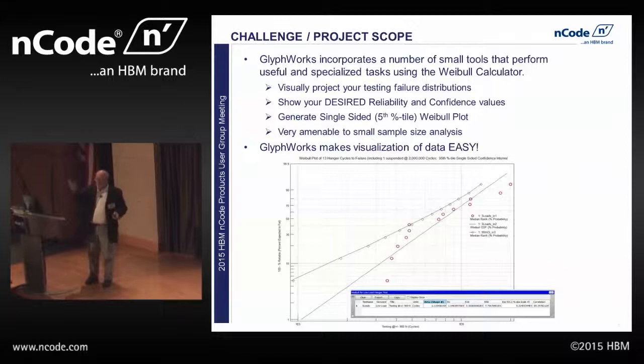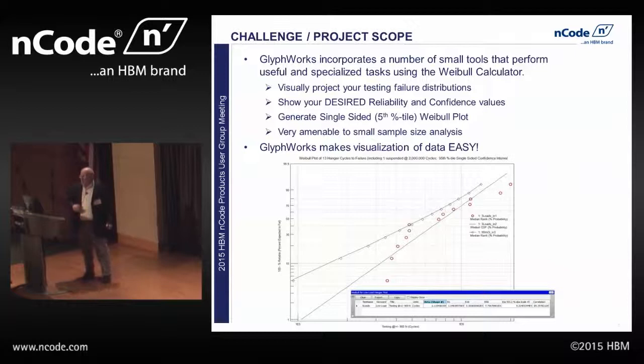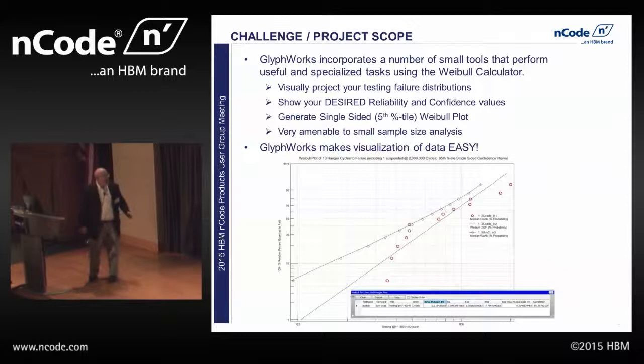Glyphworks incorporates a number of small tools. One of the small tools that's useful from time to time is the Weibel calculator. Remember this morning they talked about the median filter? Glyphworks is really built up of a lot of little tools, and then they put them together and sew them together, and we see them in these glyphs. It uses that median filter to calculate what's called median rank.